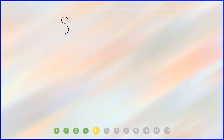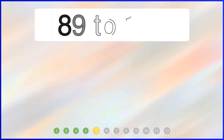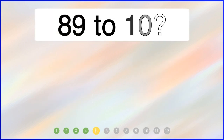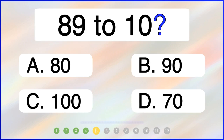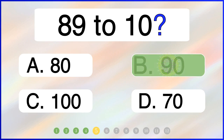What is 89 rounded to the nearest 10? The correct answer is option B: 90.